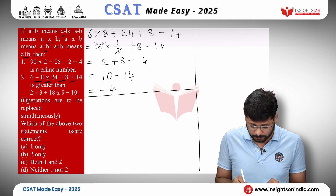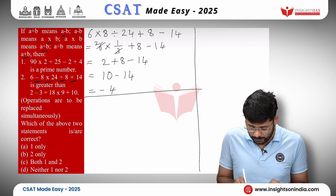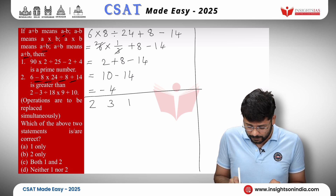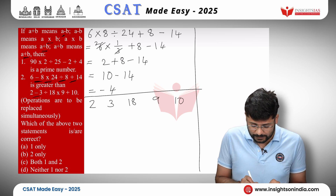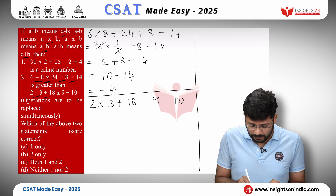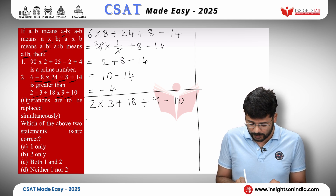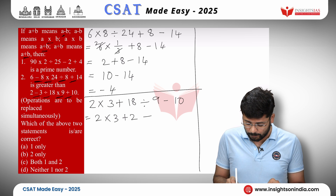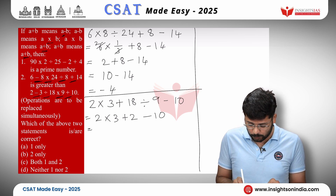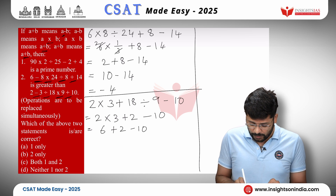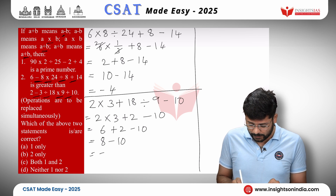Now the second expression: 2 minus 3 divided by 18 into 9 plus 10. After substitution: minus becomes into, divided by becomes plus, into becomes divided by, plus becomes minus. Division first: 18 divided by 9 gives 2, so 2 into 3 plus 2 minus 10. Multiplication: 2 into 3 gives 6. Then addition: 6 plus 2 gives 8 minus 10. Subtraction: 8 minus 10 gives minus 2.